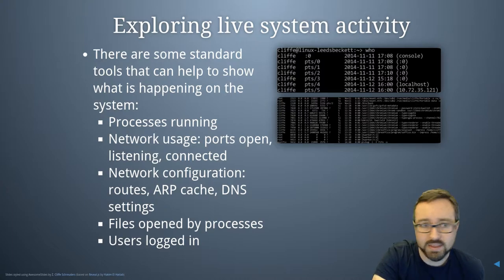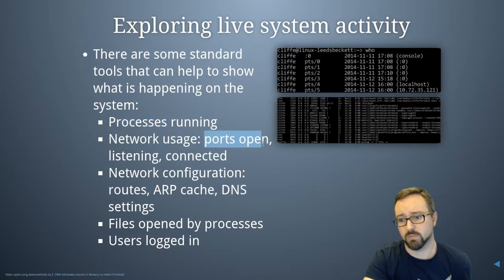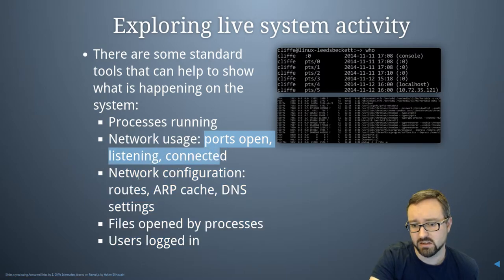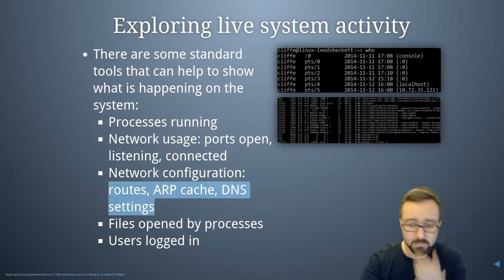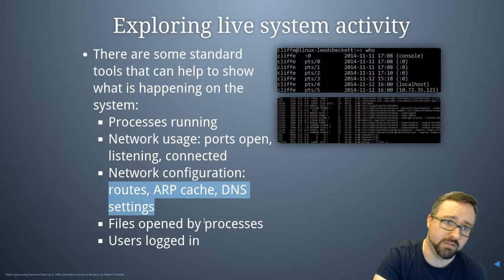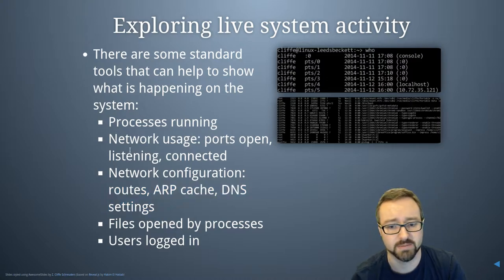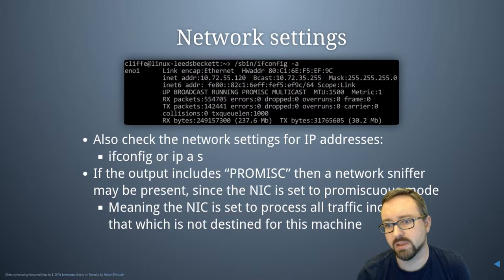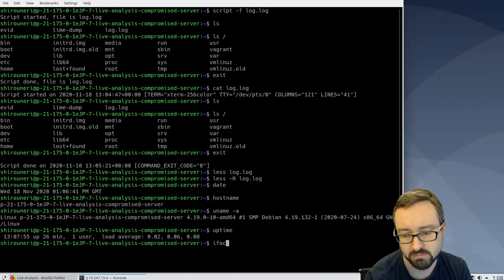So the things we're going to be looking at: what processes are running, what network usage is going on, what ports are open listening and connected, network configuration like routes, ARP cache, DNS settings, what files are being opened by what processes, and what users are currently logged into the system. To start, let's look at network settings using the `ifconfig` command.